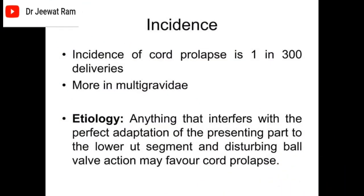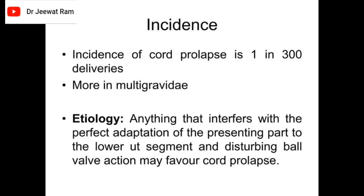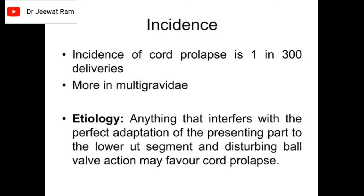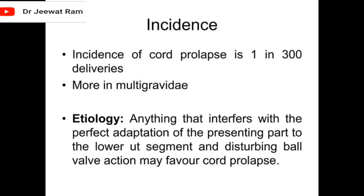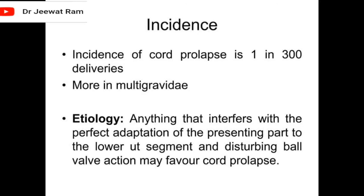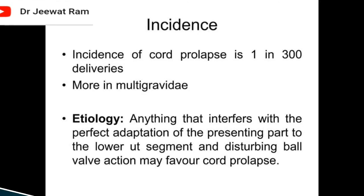Incidence: the incidence of cord prolapse is 1 in 300 deliveries, and is more common in multigravida. Etiology: anything that interferes with the perfect adaptation of the presenting part to the lower uterine segment and disturbs the valve action may favor cord prolapse.